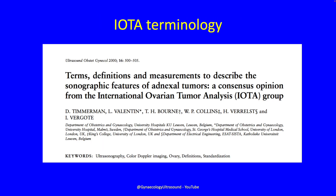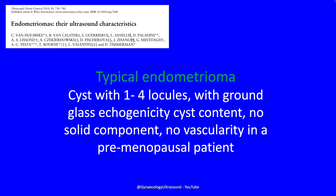We use the IOTA terminology from literature going back to 2000 on terms and definitions, giving us a system for describing adnexal masses including ovarian endometriomas. This paper described a typical endometrioma as a cyst with one to four locules with ground glass echogenicity cyst contents, no solid component, and no vascularity in a pre-menopausal patient.